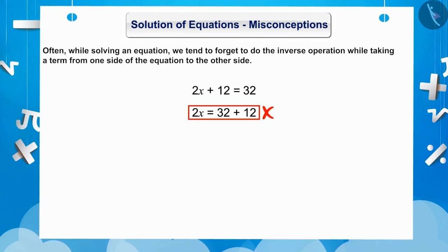The correct way of doing it is when 12 is transposed from LHS to RHS, it will be subtracted from 32 in RHS. So, the equation we now get is 2x is equal to 20.